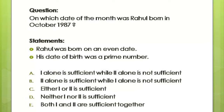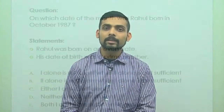This alone also is not sufficient to answer this, because there are so many prime numbers which can also be dates, such as 2, 3, 5, 7, 11, 13, 17, and so on.